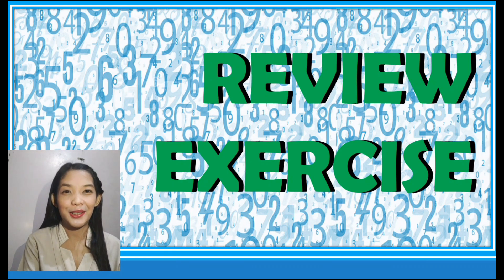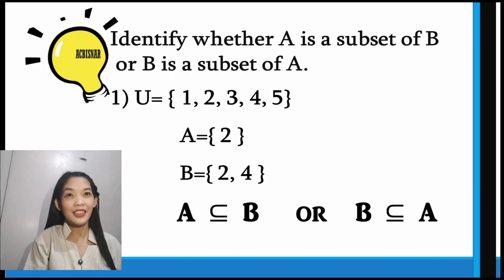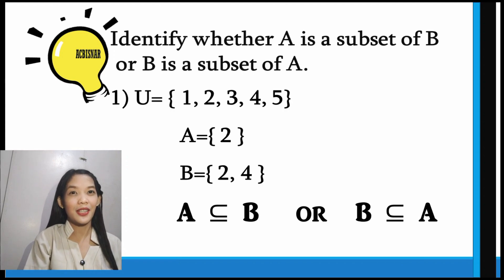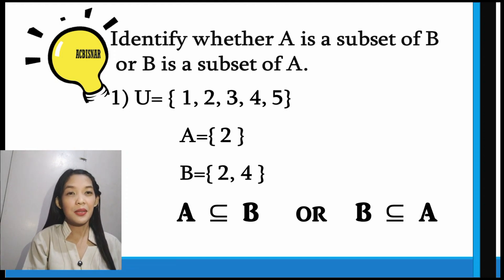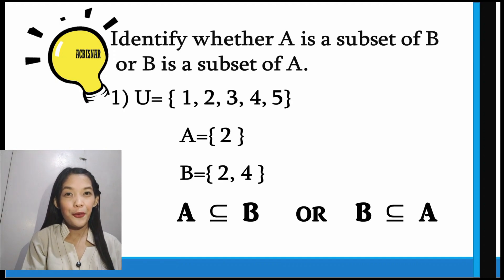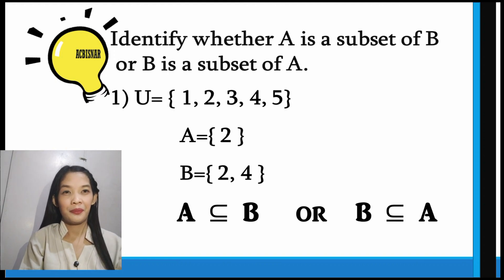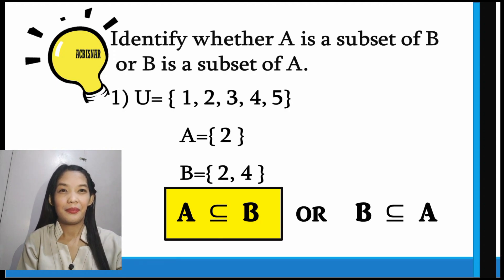Now let us have a review exercise. You can pause the video and try to answer the following. The direction says: identify whether A is a subset of B or B is a subset of A. For number 1, the universal set has elements 1, 2, 3, 4, and 5. Set A has the element 2, and set B has the elements 2 and 4. The answer is A is a subset of B, because every element in A — which is 2 — can be found in B.